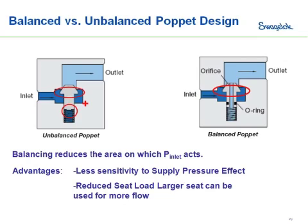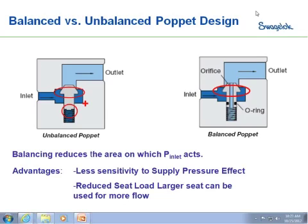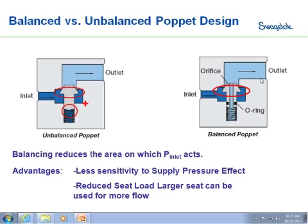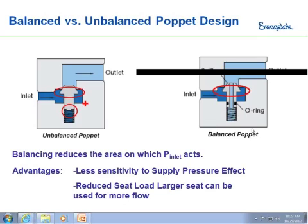On the left we have an unbalanced poppet design, where our inlet pressure forces are going to act to push that poppet up into the seat, acting on all the surfaces underneath the poppet. The balanced poppet design is shown on the right — you can see it's got an orifice machined through the poppet, allowing the outlet pressure to be resident below the poppet as well as above it. So you still have some small area that the inlet pressure forces can act on, pushing the poppet up, but they're minimized compared to the unbalanced poppet design.